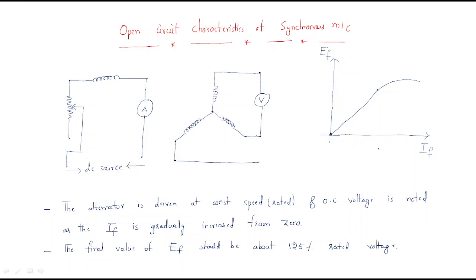By varying the field current, we collect the voltage reading from the voltmeter — this voltage is the induced EMF, Ef. The relation between the field current and the induced EMF gives the open circuit characteristics. When armature terminals are open, a graph between the terminal voltage and field current gives the open circuit characteristics.